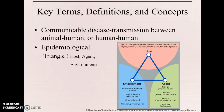Some key terms: communicable diseases involve the transmission between human and animal, or human and human, of an infectious agent. We have the epidemiological triangle, which consists of the host, the agent, and the environment. The host is the person who gets the disease, the agent is the virus or chemical agent that causes the problem, and then we look at the environment the host is in to see how that interacts with the host.